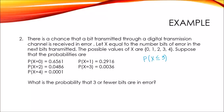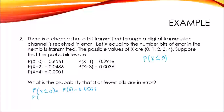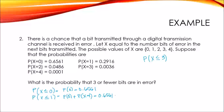Let's compute the cumulative probability for each value. When x is less than or equal to zero, that is only P(x = 0) = 0.6561. When x is less than or equal to one, that is P(x = 0) plus P(x = 1), which is 0.6561 plus 0.2916, and this equals 0.9477.